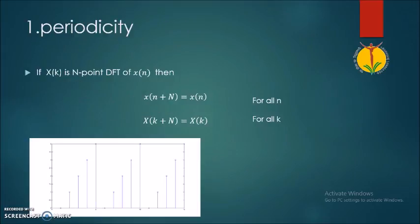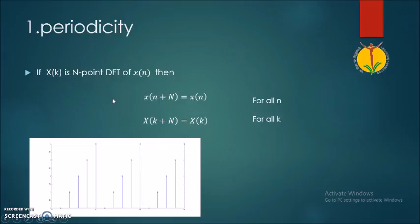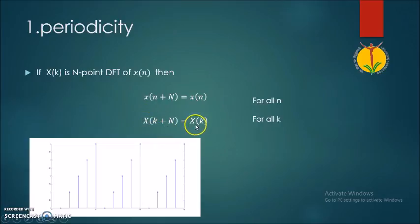Now let us see what are the different properties of DFT. A DFT of a sequence x of n is represented by capital X of k. The first property is the periodicity property, which indicates that if a sequence is periodic, then its DFT is also periodic.